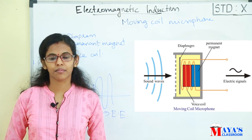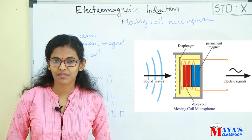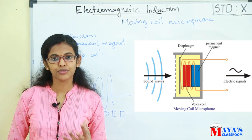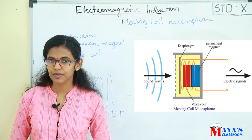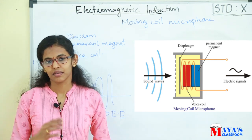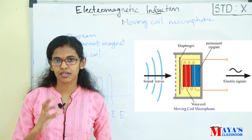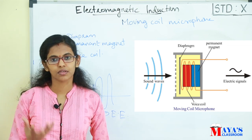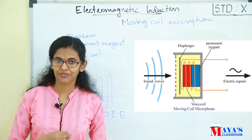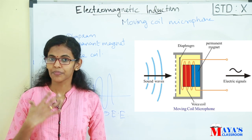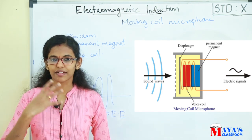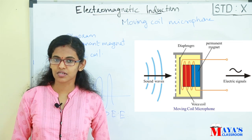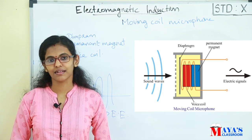To summarize: Self-induction is the change in magnetic flux due to the flow of AC in a solenoid, which creates an induced back EMF opposite to the direction of the applied voltage. Inductors work on this principle and do not cause power loss. In the moving coil microphone, the diaphragm vibrates and the voice coil vibrates in the magnetic field, converting sound energy into electrical energy.